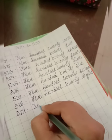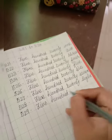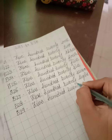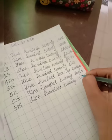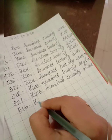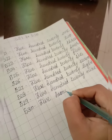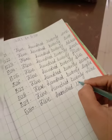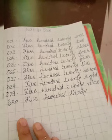F-I-V-E 5, H-U-N-D-R-E-D 100, T-W-E-N-T-Y 20, N-I-N-E 9. 529. Now 530. F-I-V-E 5, H-U-N-D-R-E-D 100, T-H-I-R-T-Y 30. So we wrote 521 to 530. Now we will write the spelling 531 to 540.